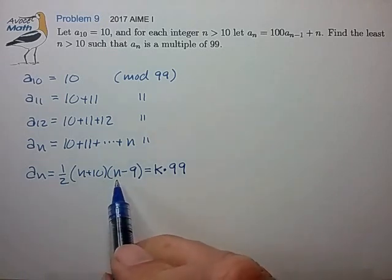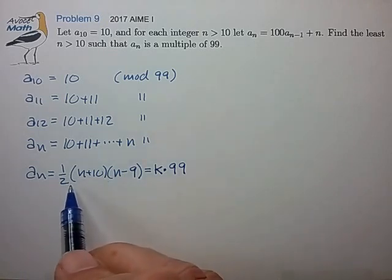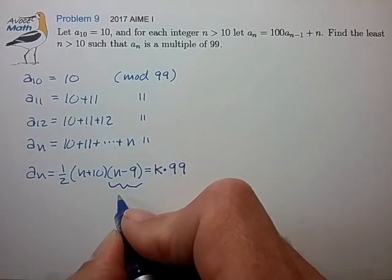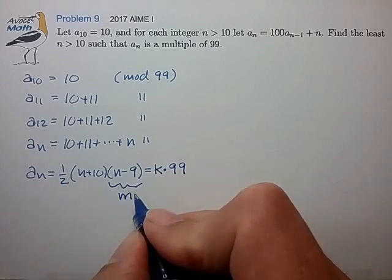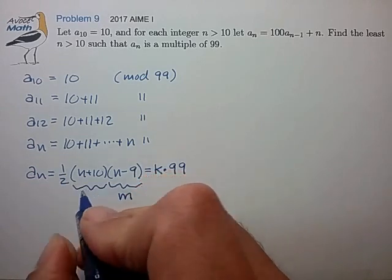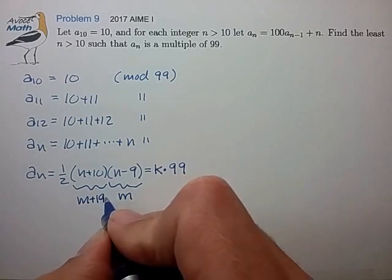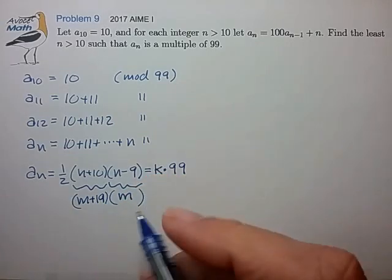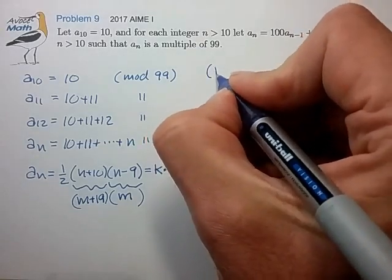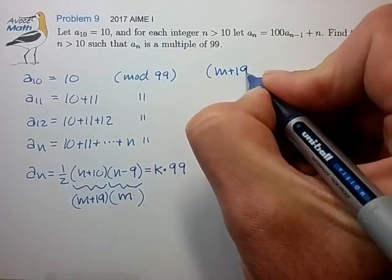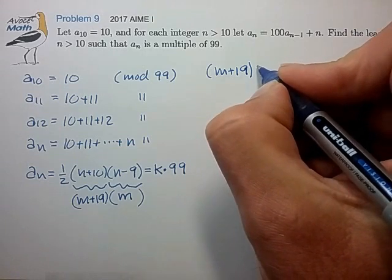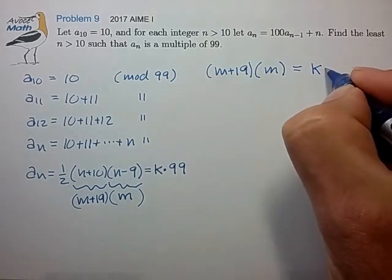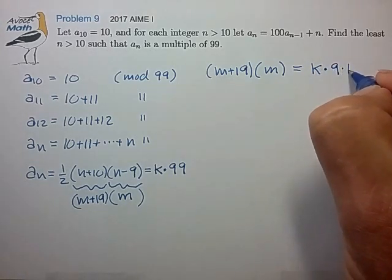We're looking for n of 10 or larger. So let's do a simple variable substitution to make this easier to look at. Let's call this some positive integer m. Now this is some positive integer m plus 19. So we're looking for the condition where m plus 19 times m is equal to some k times 9 times 11.